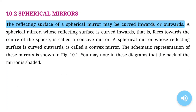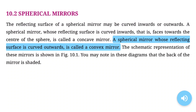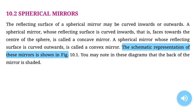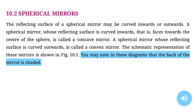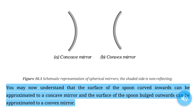10.2 Spherical Mirrors. The reflecting surface of a spherical mirror may be curved inwards or outwards. A spherical mirror whose reflecting surface is curved inwards, that is, faces towards the center of the sphere, is called a concave mirror. A spherical mirror whose reflecting surface is curved outwards is called a convex mirror. The shaded side is non-reflecting. The surface of the spoon curved inwards can be approximated to a concave mirror, and the surface of the spoon bulged outwards can be approximated to a convex mirror.